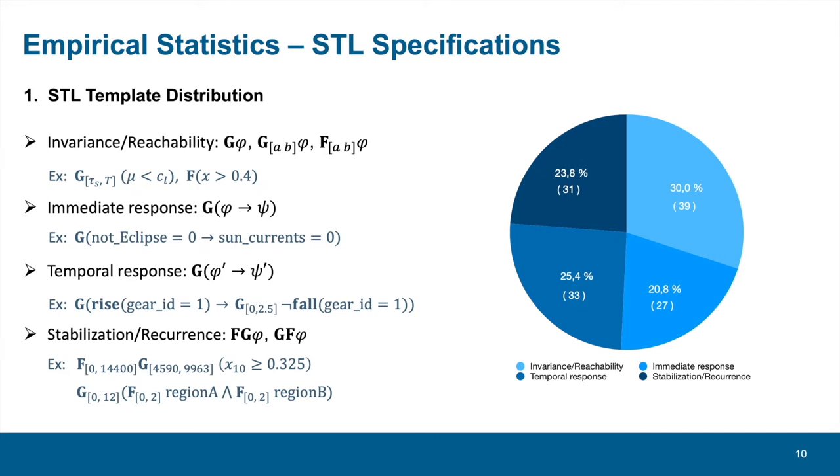We start with analyzing a template distribution of STL formulas. The first represents invariance or reachability properties. Instead of an always keyword from our tool, invariance is formally denoted as a G operator. For reachability, we use an F operator to express the meaning of eventually. The second is immediate response, which means once the precondition is satisfied, then the postcondition must be true immediately. In this template, phi and psi are called atomic propositions, which do not include any temporal operators like G or F.